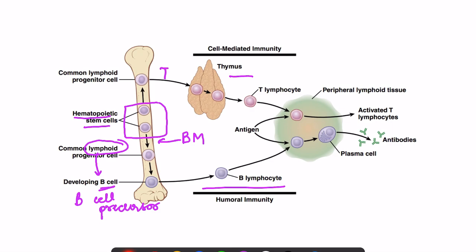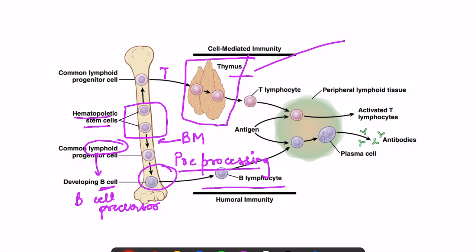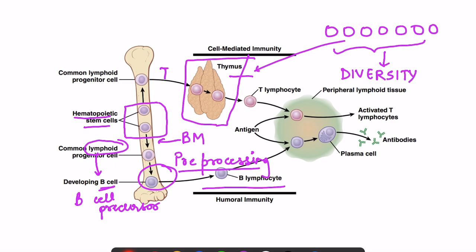B cell precursors remain in the bone marrow for their development — a process called pre-processing. T cells, however, move to the thymus for pre-processing. In the thymus, T cell precursors differentiate and divide rapidly — that is proliferation — forming a large pool of cells, and they also attain diversity.